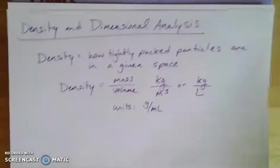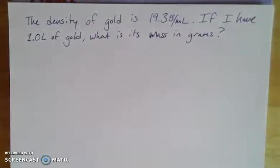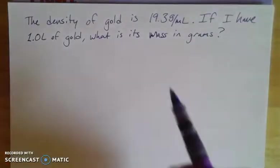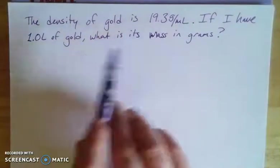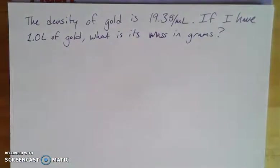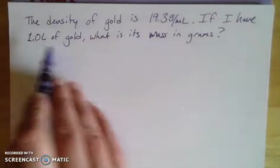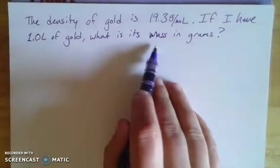We can use this information to solve problems like this one. I looked up the density of gold and it's 19.3 grams per milliliter. If I have 1.0 liter of gold - again picturing that half of a two-liter bottle of soda worth of gold, which would be awesome - we can look at its mass in grams. Let's set this up. We're trying to get from liters to mass, so we should start with the given quantity, which is 1.0 liters.